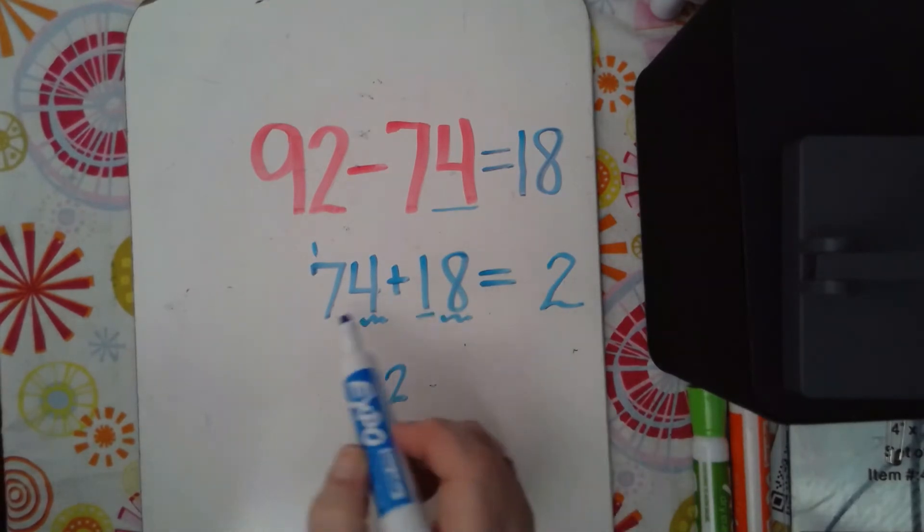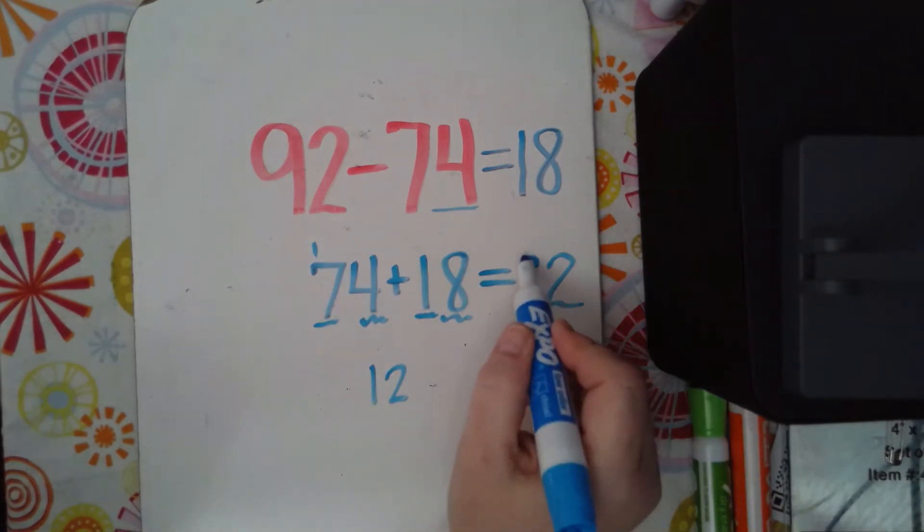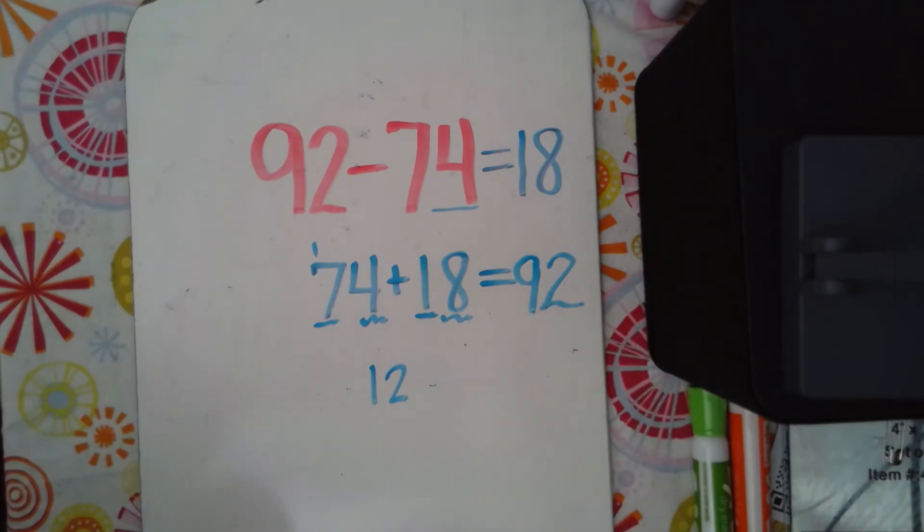And I'm just going to put this 10 over here with this other 7 that is a 10. And now I'm going to add my tens place. I have 7 tens and 1 ten, which makes 80. And then the other 10 that I carried over makes 90. So that equals what we started with, 92.